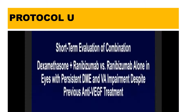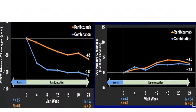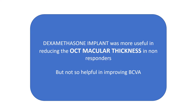Protocol U was a short-term evaluation in which patients with refractory or persistent diabetic macular edema were given either dexamethasone combined with ranibizumab, or ranibizumab alone. Anatomically, the combination performed much better — there was a significant reduction in central subfield thickness on OCT in the combination group. However, in terms of visual acuity, both groups performed almost equally. This tells us that the dexamethasone implant was more useful in reducing OCT macular thickness in non-responders, but was not so helpful in improving best corrected visual acuity.